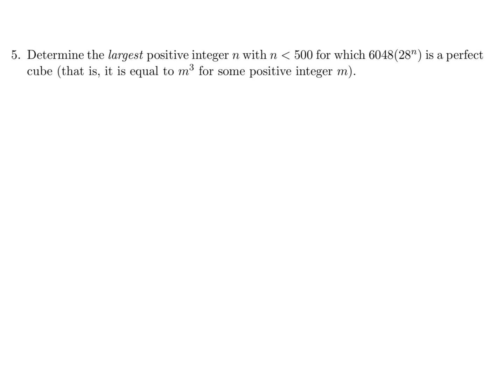Determine the largest positive integer n with n less than 500 for which 6048 times 28 to the power of n is a perfect cube. The first thing I want to do is take this 6048 times 28^n and break it up into its prime factors. 6048 is 2^5 times 3^3 times 7^1, and 28 is 2^2 times 7^1, and that's all to the power of n.